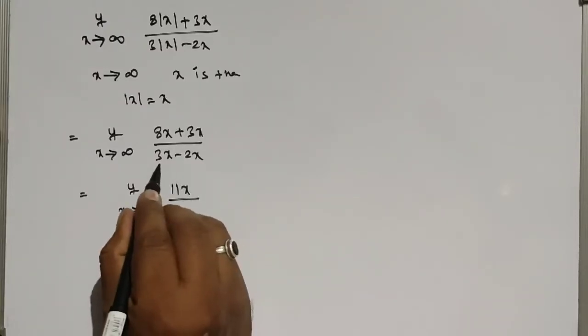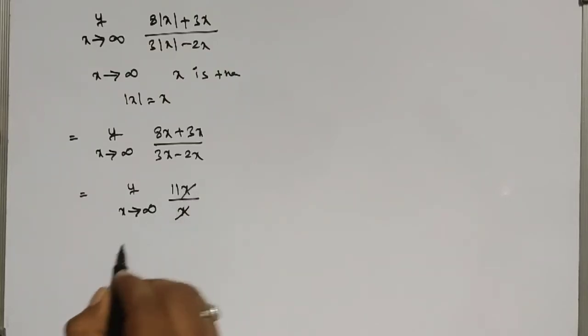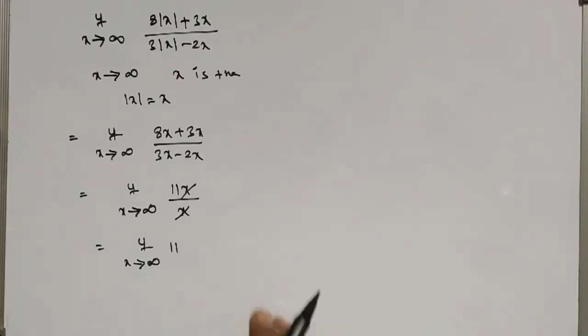3x minus 2x becomes x only, so now x cancels here and we get limit x tending to infinity of 11. It is a constant, so you can write it directly as 11.